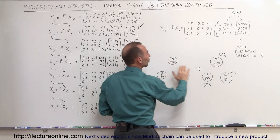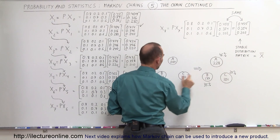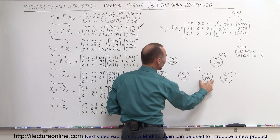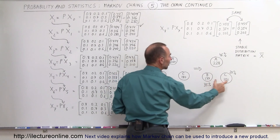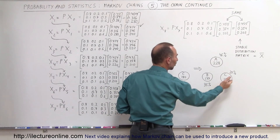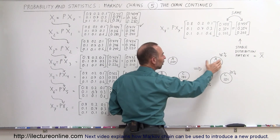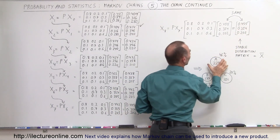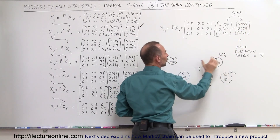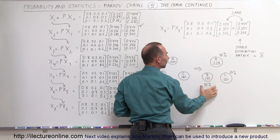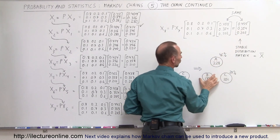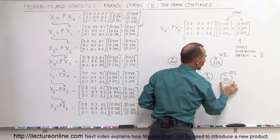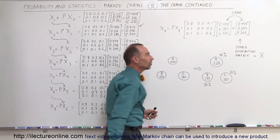Store A will now have 228 customers, store B will have 177 customers, and store C will have 101 customers. The distribution is now different: approximately 46% of customers go to A, 35% go to B, and 20% go to C.